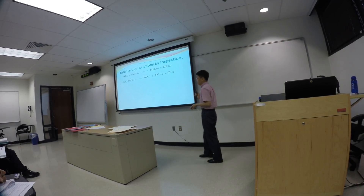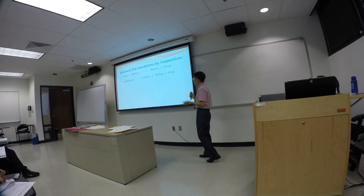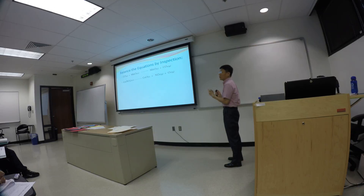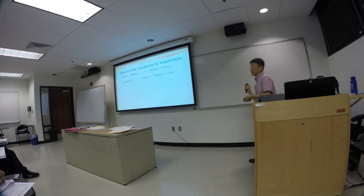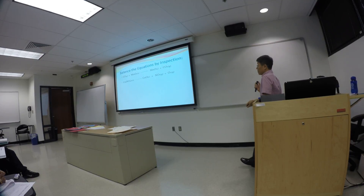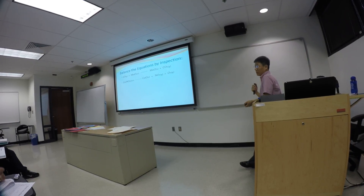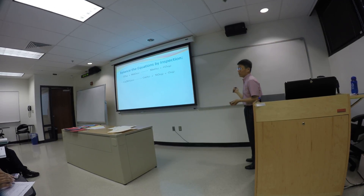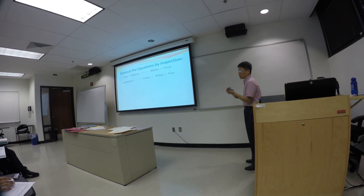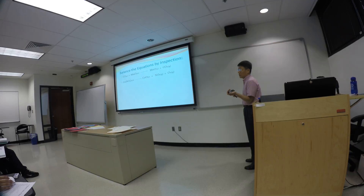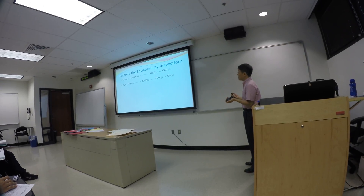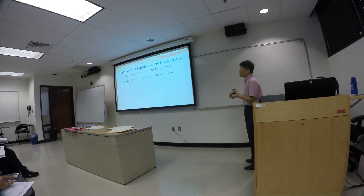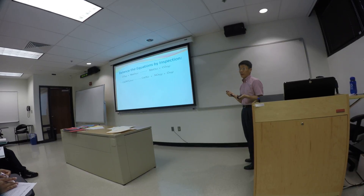So is this equation balanced? We have one copper on both sides, so copper is balanced. How many nitrogen on the left side? Two. How many on the right? One. So that's not balanced — two nitrogen on the left, one on the right. Oxygen atoms? Six on the left. Five on the right. So oxygen is not balanced either.